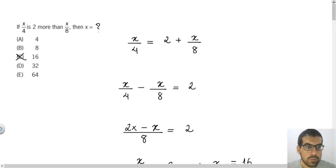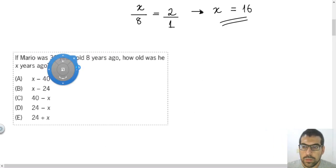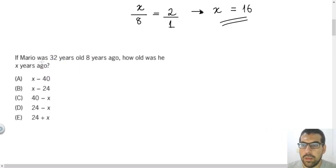In the second question that we will solve, it told us in the statement that if Mario was 32 years old 8 years ago, how old was he x years ago?